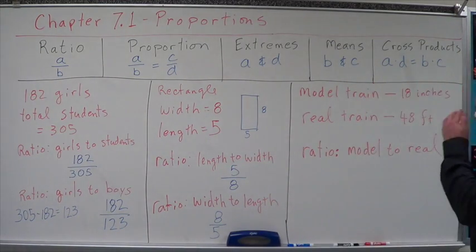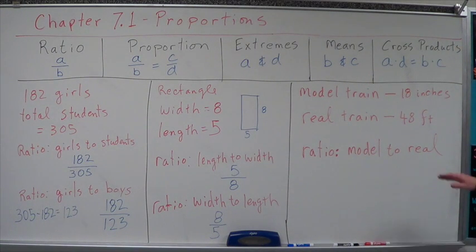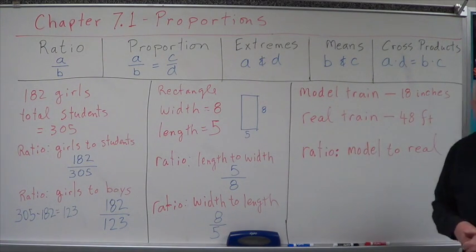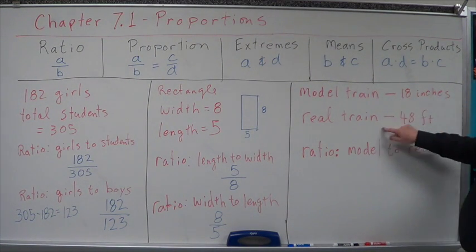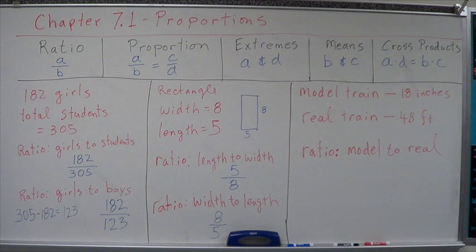Now, this one, it's going to be just a little bit different. We have a model train and we have a real train, and we want to set up what is the scale factor. We'll talk about that in the next section. But we want to know what the ratio of the model to the real is. Notice that the model is in 18 inches and the real train is in feet. Now, in order for us to set this up, we have to have them in the same unit of measure. Yeah. Put them in the same unit of measure.